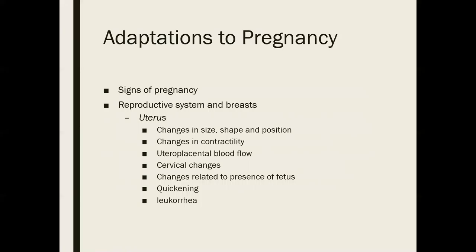At conception the uterus is shaped like an upside-down pear. During the second trimester, as the muscular walls strengthen and become more elastic, the uterus becomes more spherical and globular in shape. During the third trimester, the fetus becomes longer and the uterus becomes more ovoid in shape, extending right up into the abdominal cavity. It's remarkable how adaptive the human body is to pregnancy.